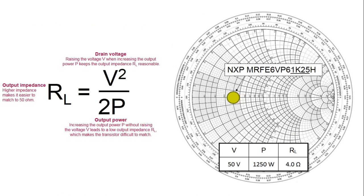Look at what happens when we increase the output power at a constant voltage. The output impedance falls quickly, making it increasingly difficult to match the 50 ohms. But watch.